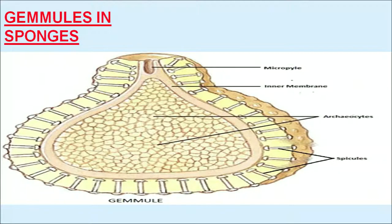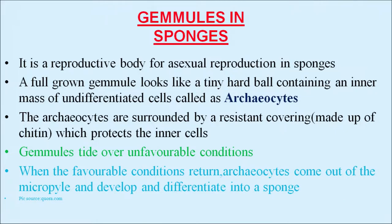As seen in the picture of a gemmule in sponges: there is a micropyle which is the opening, an inner membrane, archaeocytes which are a ball of cells, and outside there are spicules. Gemmules are reproductive bodies for asexual reproduction in sponges. A full-grown gemmule looks like a tiny hard ball containing an inner mass of undifferentiated cells called archaeocytes, surrounded by a resistant covering made up of chitin, which provides hardness and protects the inner cells. Gemmules tide over unfavorable conditions, and when favorable conditions return, archaeocytes come out of the micropyle and develop into a sponge.